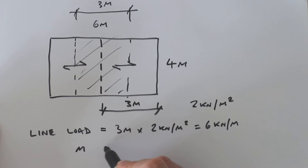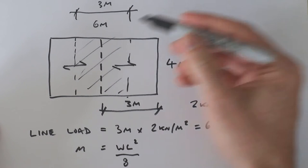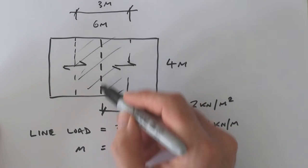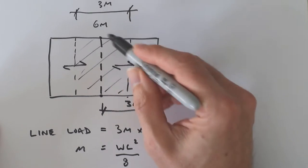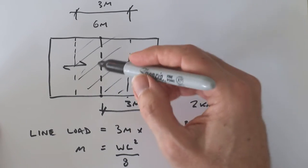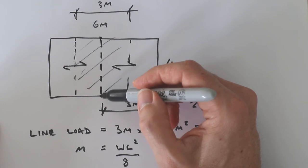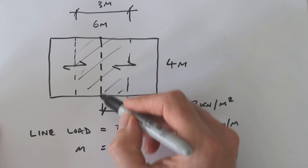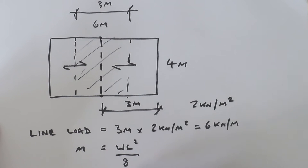The next thing we need is the moment. A simple formula for the moment is wl² over 8, and that formula is valid as long as your beam is simply supported—which means it's supported at each end—and it has a uniformly distributed load along the full length. So wl² over 8. Let's do that calculation. W is our line load, so that's six.